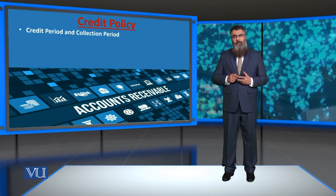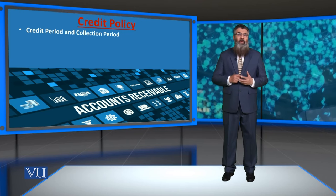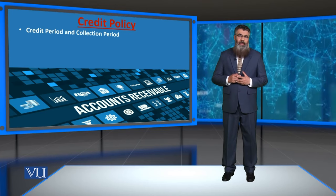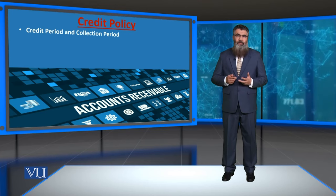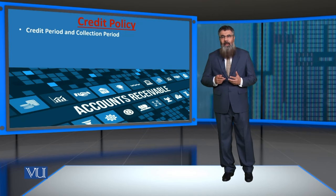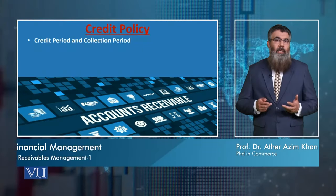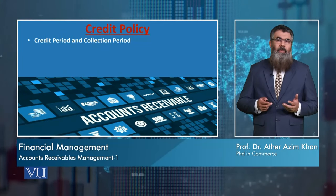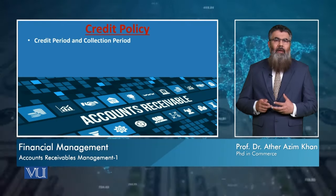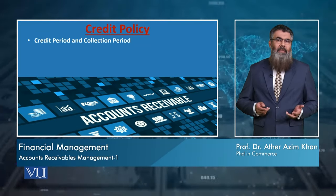In reality, at times we do have a certain agreed upon credit period but the amount is not collected in that period and there are delays. Hence, in reality, we have another time period after which the amount of sale is collected — we call it the collection period. So the credit period is a theoretical agreement and the collection period is the actual time when we receive our money.